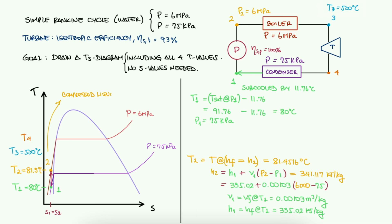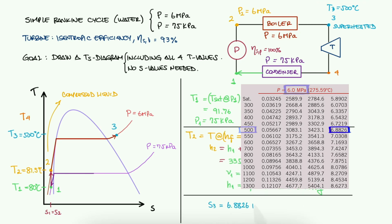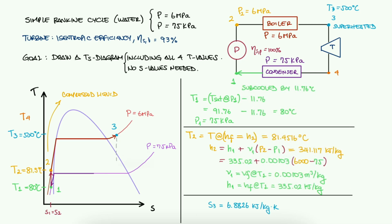Now, T3 was given to us, and at this pressure and this temperature, the water is superheated, so we know where to draw state 3 and we can copy the entropy value. This is important because we'll need S4S to figure out where state 4S is. Now all we're doing here is drawing the TS diagram and we are asked not to find specific entropy values. But if you want to see that process, make sure to check out one of the examples linked below.